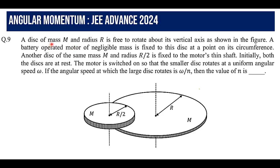In this problem, a disc of mass m and radius r is given. This disc has mass m and radius r, and it is free to rotate about its vertical axis as shown in the figure. A battery operated motor of negligible mass is fixed to this disc at a point on its circumference, at the periphery of the bigger disc.